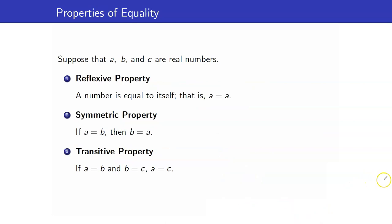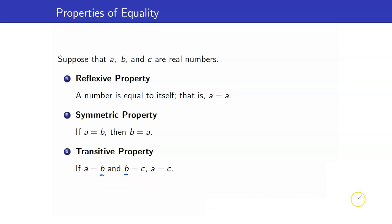Let us discuss the properties of equality that we will be using in solving linear equations. The first one is the reflexive property — a number is equal to itself. For the symmetric property, the order does not matter with an equality sign: if A equals B, then B equals A. The transitive property is like a chain: if A equals B and B equals C, then the first and last numbers should also be equal — they are connected by B.